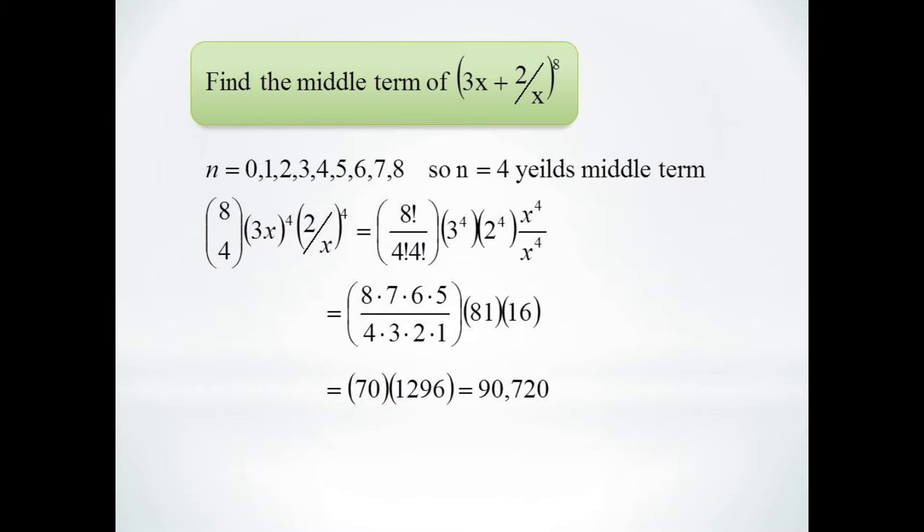Now just plug everything in. We get 8 choose 4 times 3x to the 4th times 2 over x to the 4th. 8 choose 4 is 70. 3x to the 4th is 81x to the 4th. And 2 over x to the 4th is 16 over x to the 4th.